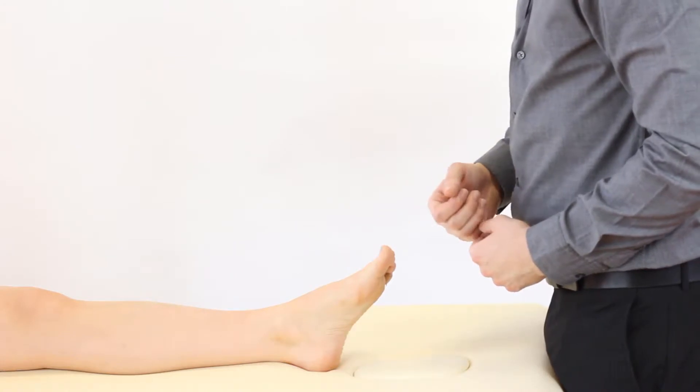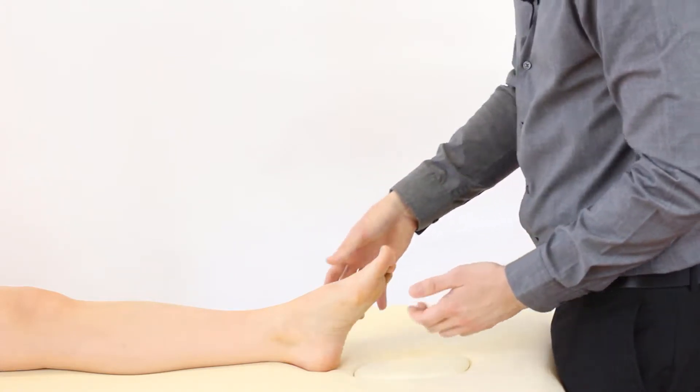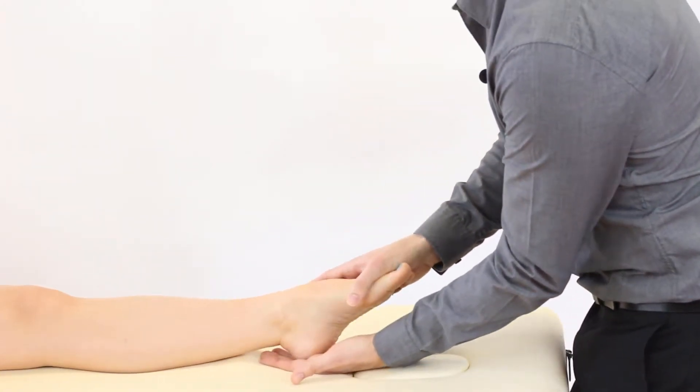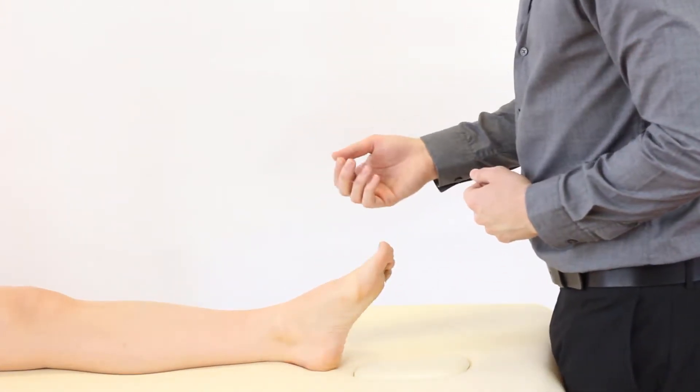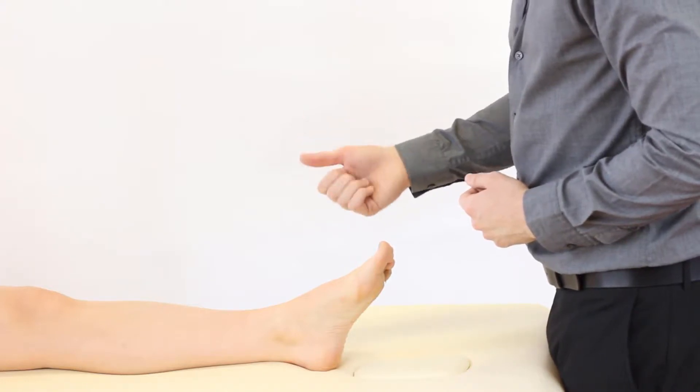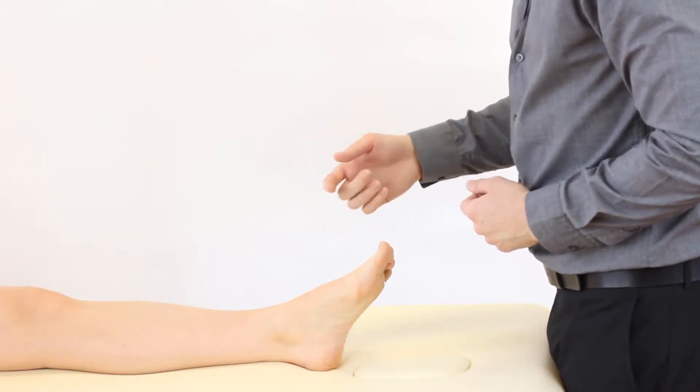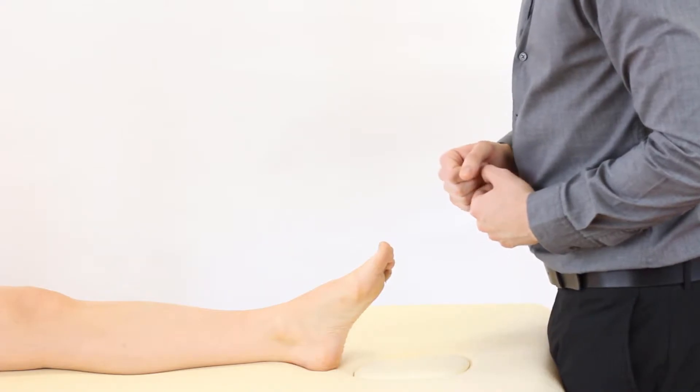The normal expected range is 50 degrees and the expected end feel is elastic. If it is not elastic it may be blocked either at the subtalar or the talocrural joint either from general stiffness or perhaps an osteoarthritic condition.